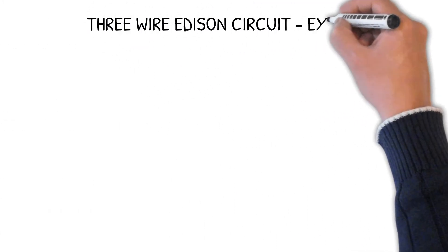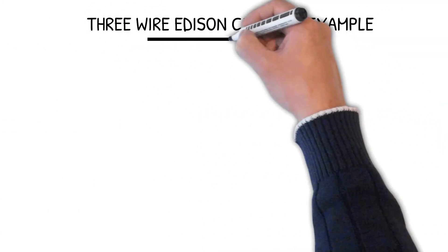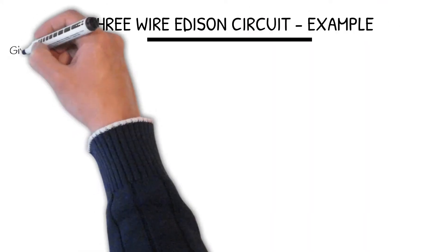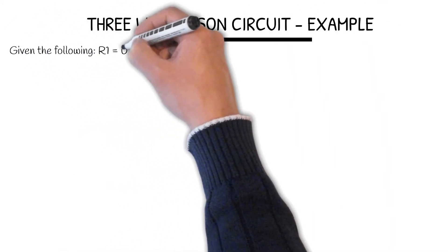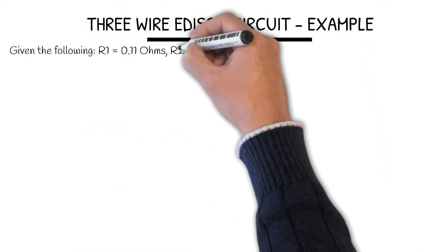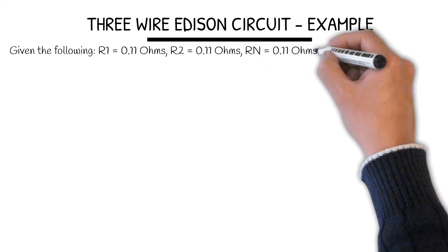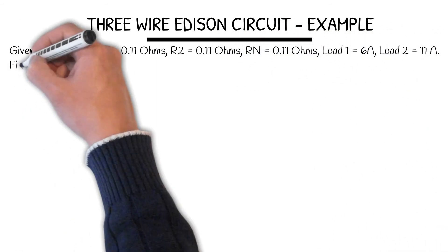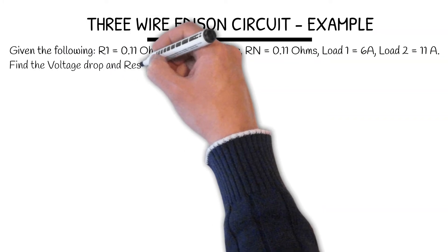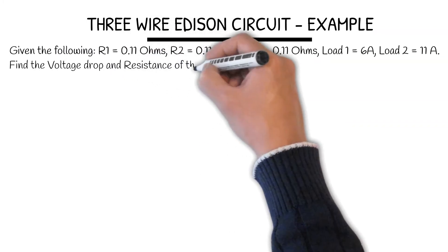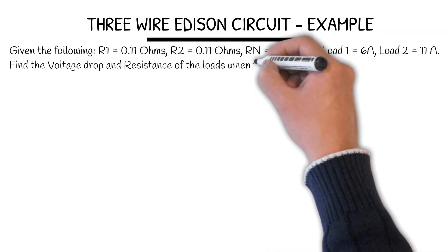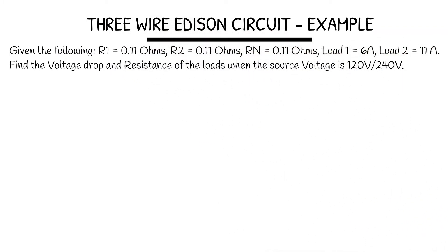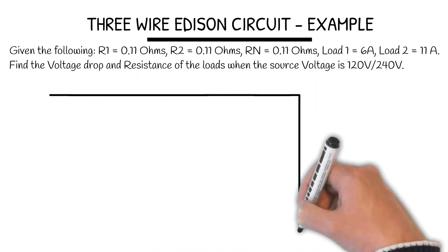3-Wire Edison Circuit Example. Given the following: if all the resistors are 0.11 ohms, load one is 6 amps, load two is 11 amps, we want to find the volt drops and resistance of the load when the source voltage is 120/240 volts.